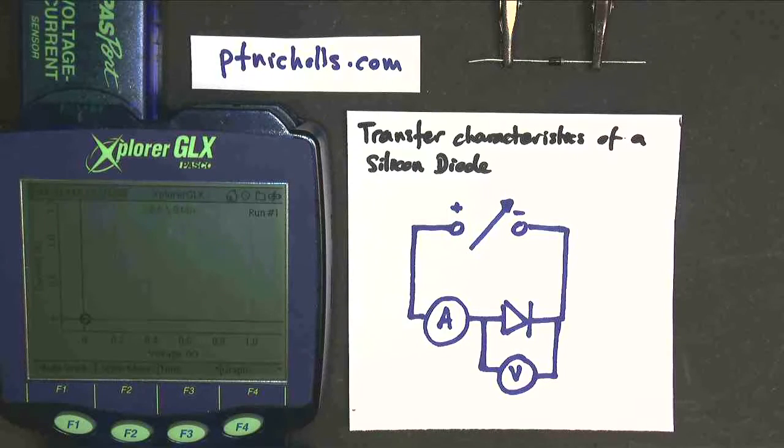I'm going to turn the voltage up and to start with, not a lot happens. I go from 0 to 0.6 volts with very little current, and then as I continue to turn the power supply up, suddenly the current rises very steeply and the voltage across the diode doesn't increase very much more. That's the classic shape we would expect for a diode.